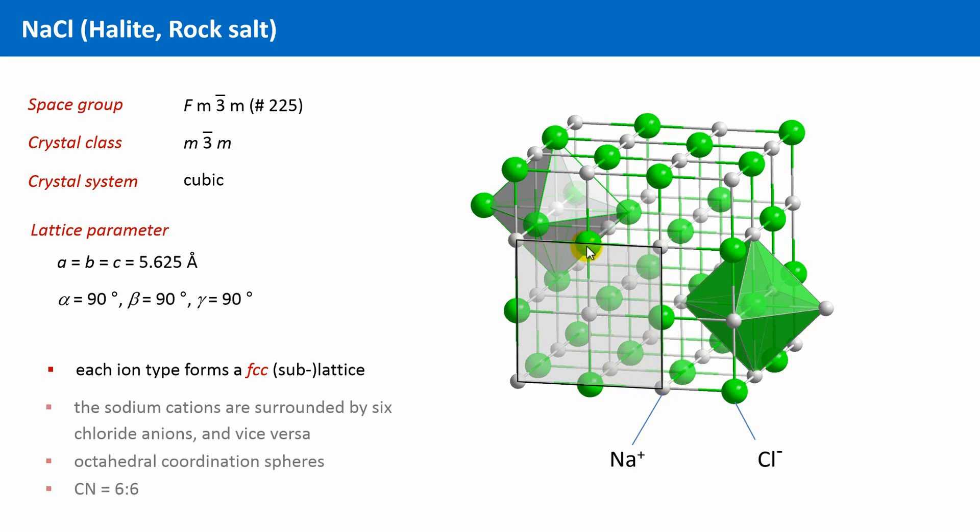If you look at the surroundings of the ions, then we see that each sodium ion is surrounded by six chloride ions, in an octahedral fashion, and inversely, each chloride anion is surrounded by six sodium cations. So the CN, the coordination number, is six for both species. They have to be, of course, equal, because the compound has to be electrically neutral.